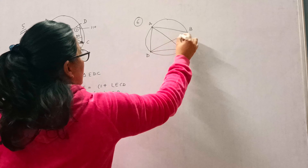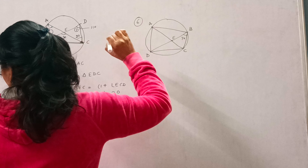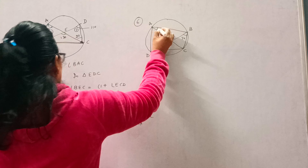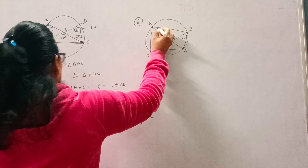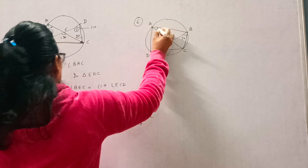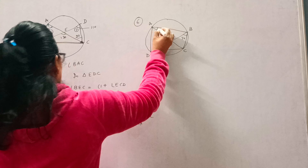Now, question number 6. ABCD is a cyclic quadrilateral whose diagonals intersect at point E. Angle DBC is 70 degrees and angle BAC is 30 degrees. First, find angle BCD.